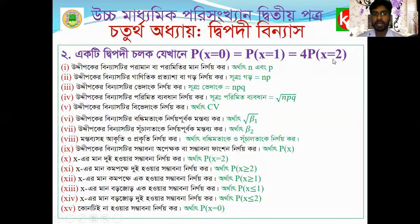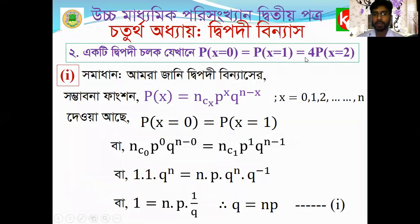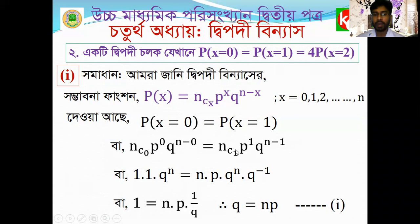The binomial probability function is: P(X=x) = nCx * p^x * q^(n-x), where x = 0, 1, 2, ..., n. For x=0, we get nC0 * p^0 * q^(n-0), and for x=1, we get nC1 * p^1 * q^(n-1).